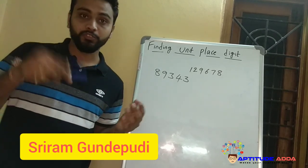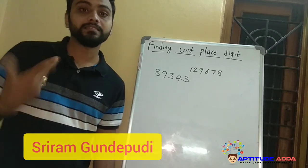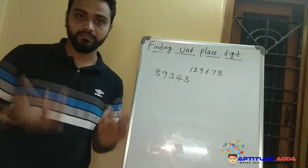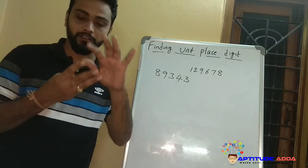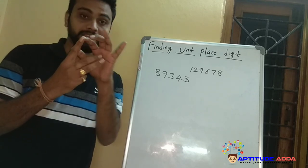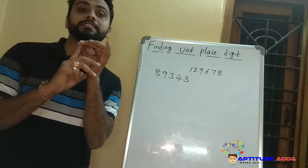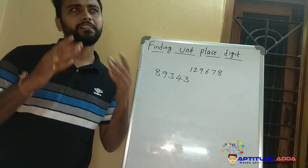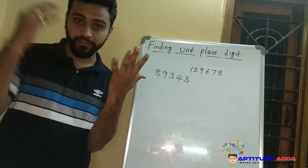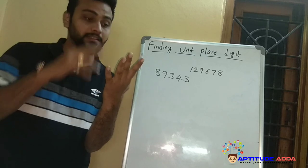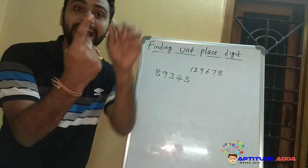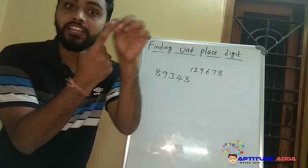For example, today is Sunday — then after three days it will be what? Today is Sunday, so after three days: Sunday, Monday, Tuesday, Wednesday — after three days it will be Wednesday. Then after nine days it will be what? Sunday, Monday, Tuesday, Wednesday, Thursday, Friday, Saturday, Sunday, Monday — it will be Tuesday.